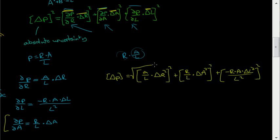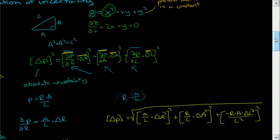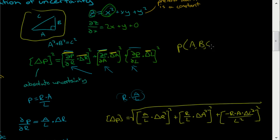Taking the square root of both sides, the absolute uncertainty of P equals the square root of the sum of the partial derivative of each variable times the uncertainty of each variable, all squared and added together. This is essentially Pythagoras' theorem — A squared plus B squared equals C squared — but we do it for as many variables as we have. If our function P took in four variables A, B, C, and D, we would add one more term. This is how you calculate the propagation of uncertainty — it's a more complicated method than other types of estimates, but it gives you a better answer.